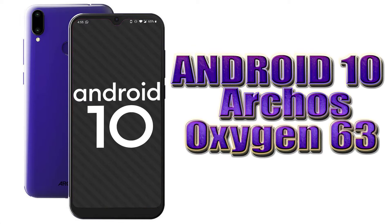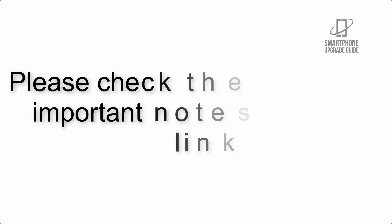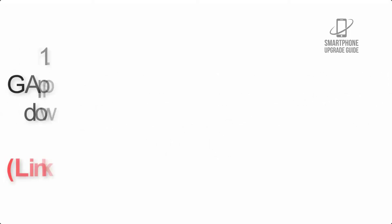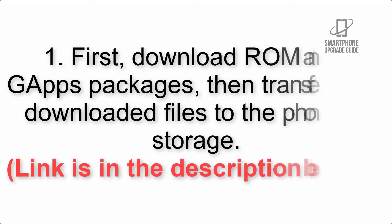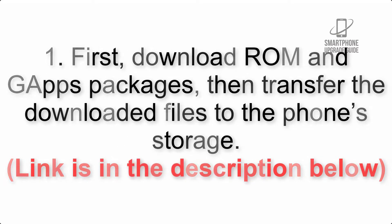Install Android 10 on the OnePlus 6/6T via Lineage OS 17.1 GSI treble ROM. Please check the description for important notes and all the download links. First, download the ROM and GApps packages, then transfer the downloaded files to the phone storage. The link is in the description below.